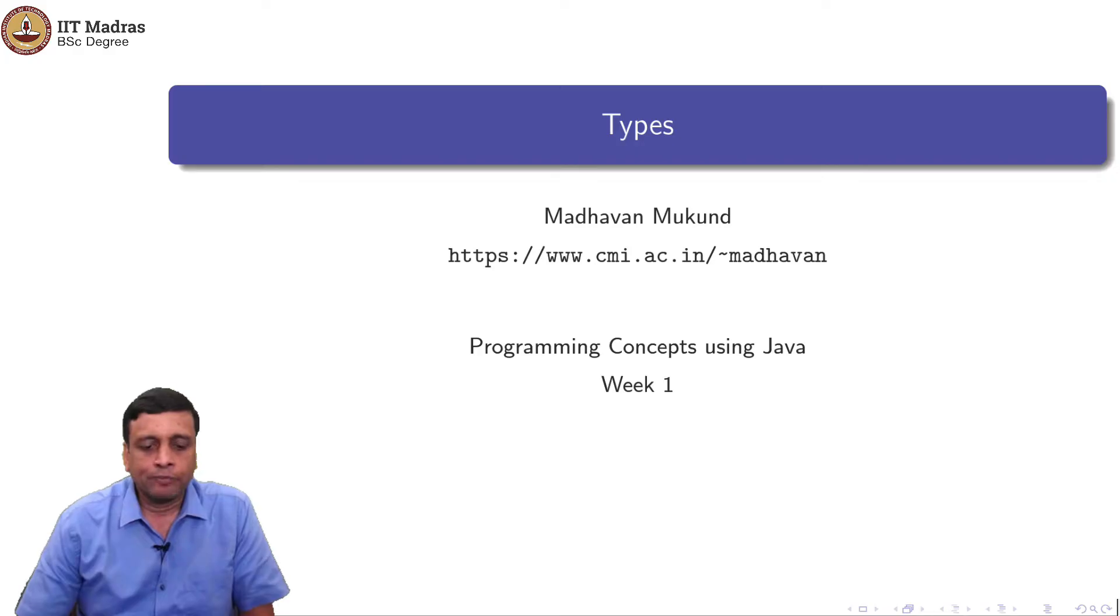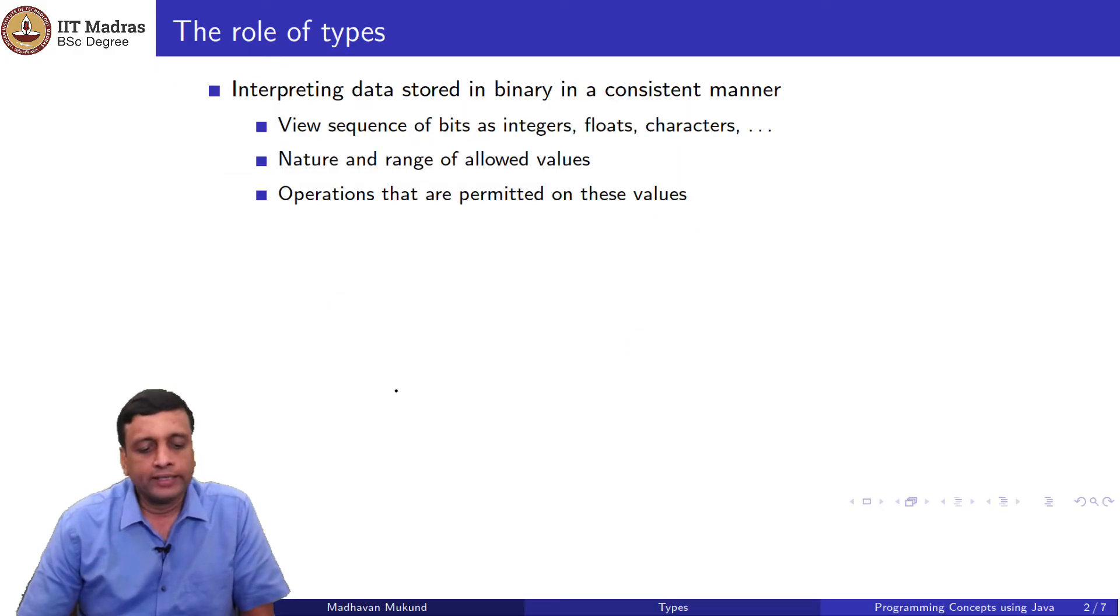Let us take a closer look at types in programming languages. Why do we need types? The first thing we said was that storage in a computer is all binary. We only have binary digits, zeros and ones. Everything is a bit sequence. There is no way of really recording the meaningful value except by interpreting it through a type. We have to decide whether this part of the memory should represent an integer or a float, what type of operations are allowed on it. Just to convert this uniform storage of bits into meaningful concepts that we can use externally, we need to impose some notion of types.